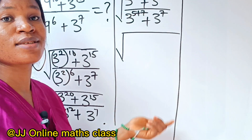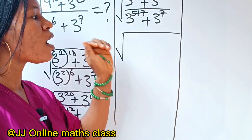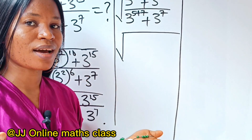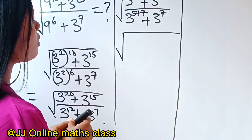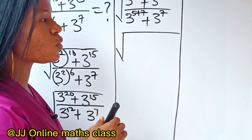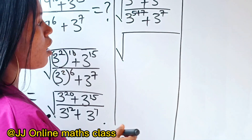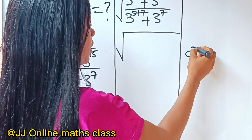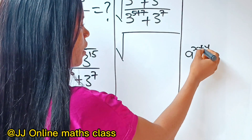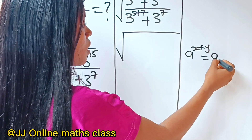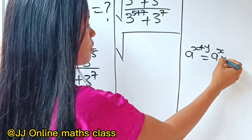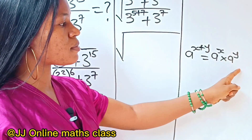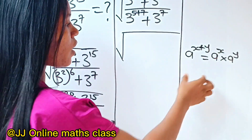If this is the first time you're coming across this channel, please don't hesitate to subscribe and also click your notification bell so that you don't miss my next class. Now, in indices, when you have a to the power of x plus y, it is equal to a to the power of x times a to the power of y.